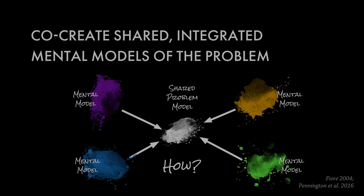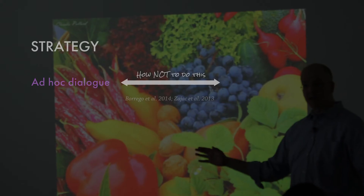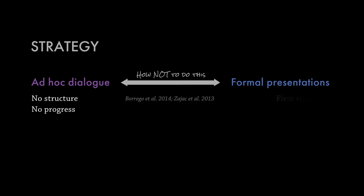We do know some things about how not to do it. Borrego has done a lot of empirical research on teams and noted that most teams adopt one of two strategies: either ad hoc dialogue around the table — let's hope something good comes out of it — or formal presentations. We know from both ends of that spectrum that they don't work. Zajac, a cognitive scientist, wrote a paper about cognitive load, showing that both ends really put significant cognitive load on participants, making it very challenging to figure out a way forward.